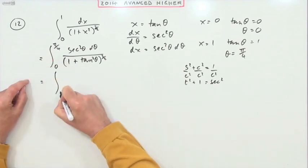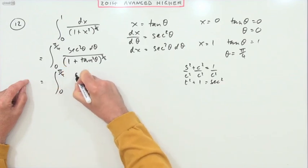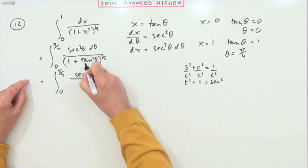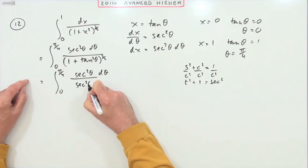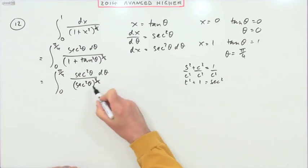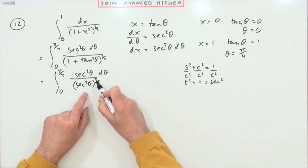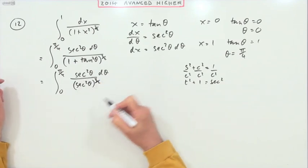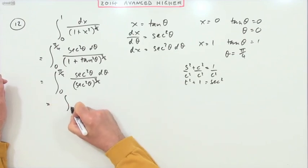So that will be the integral from 0 to π upon 4 of sec squared over another sec squared, but this is to the power 3 upon 2, so that's going to be power 3. So with power 2 on top and power 3 underneath, there'll be 1 sec left underneath.